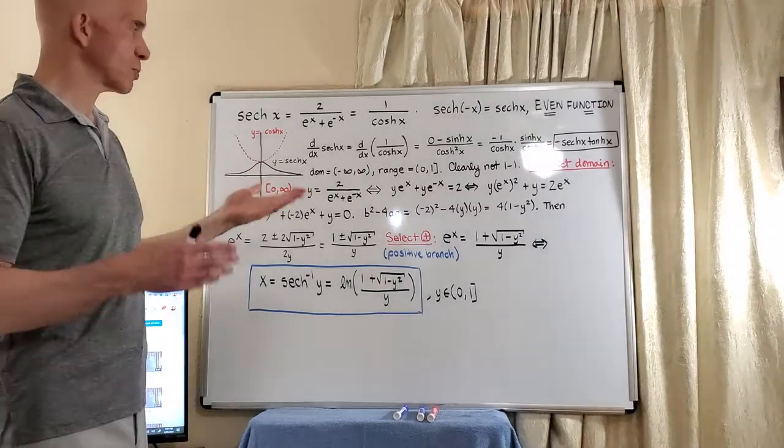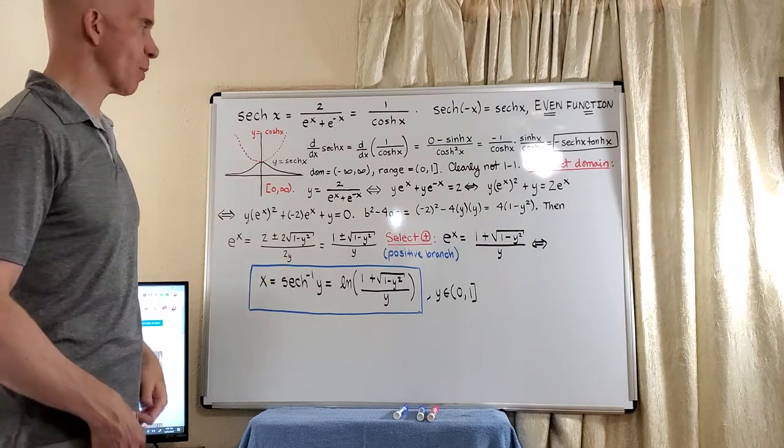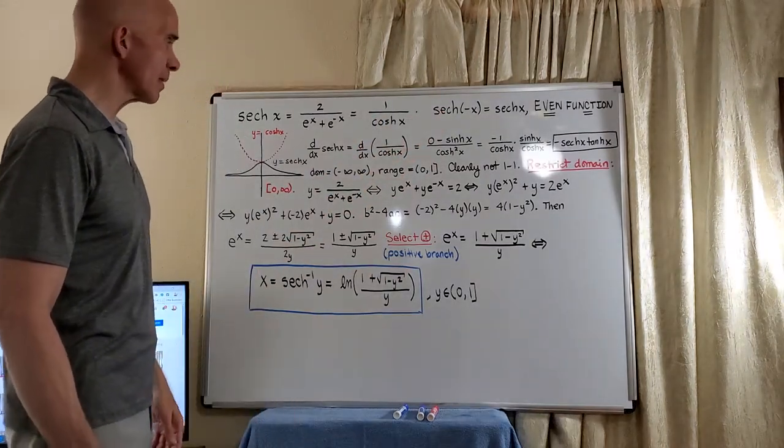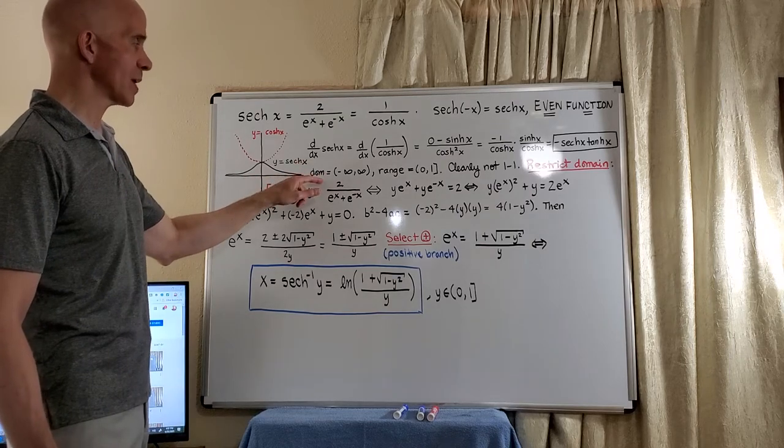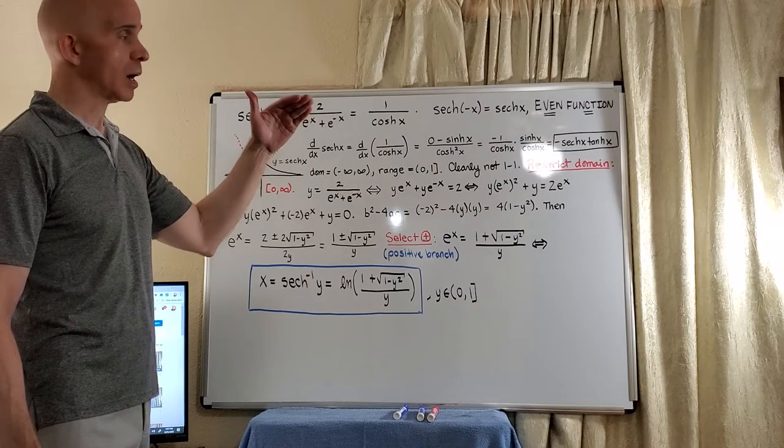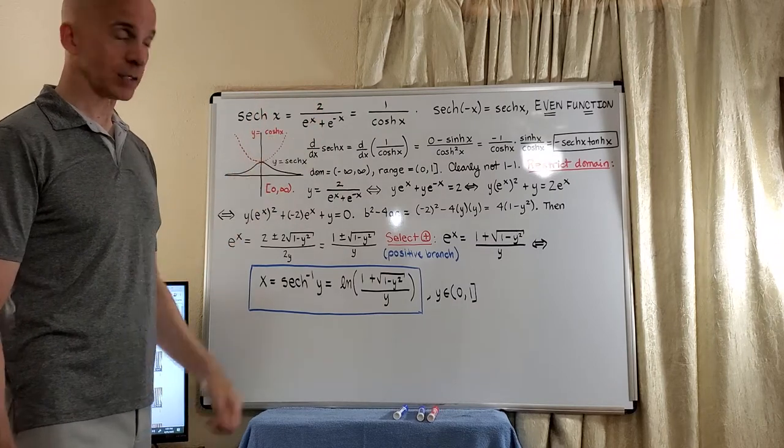Clearly a function whose graph is symmetric with respect to the y-axis, which is what we would expect from an even function. And so what we see here is we have a domain of all real numbers and a range that runs from zero to one, including one, not including zero.